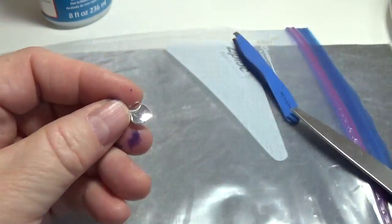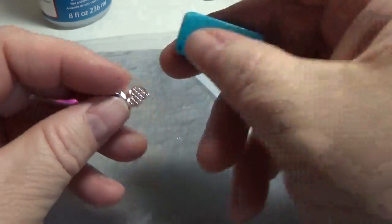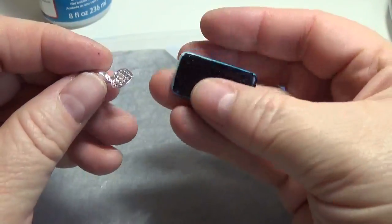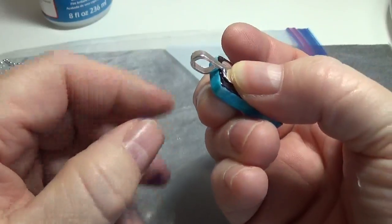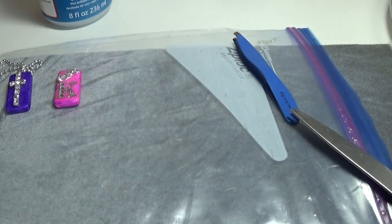For the bale, I just put a little E6000 right here on the glue-on bale and just put it on the top. And then I slipped a ball chain through it. So it's as simple as that.